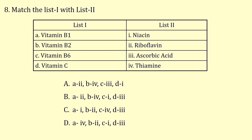Match list 1 with list 2. Vitamin B1 is thiamine. Vitamin B2 is riboflavin. Vitamin C is ascorbic acid. Here, niacin is vitamin B3, but the list shows B6. By observing other options, the correct answer is option D.